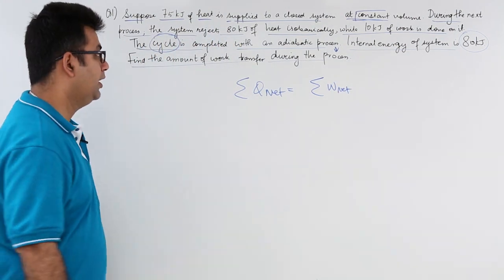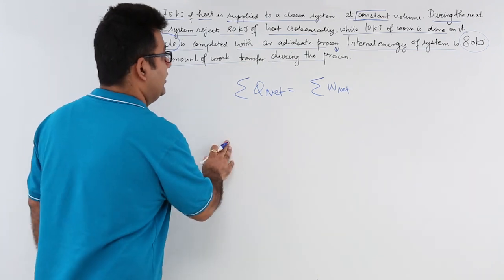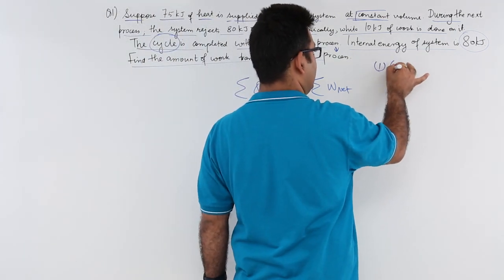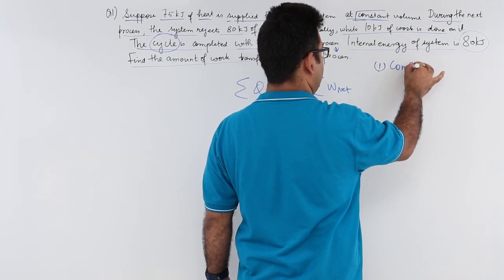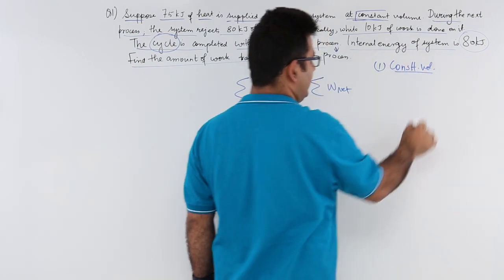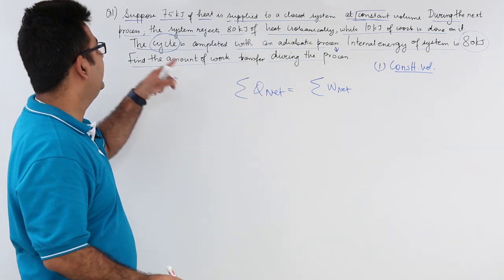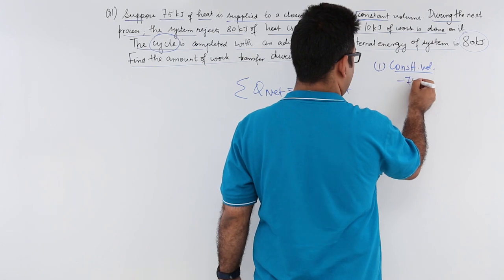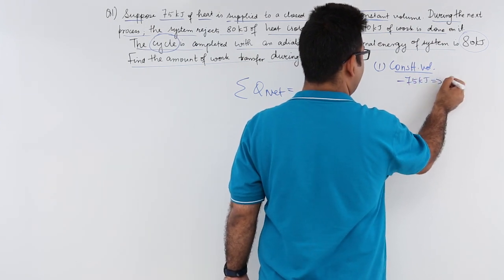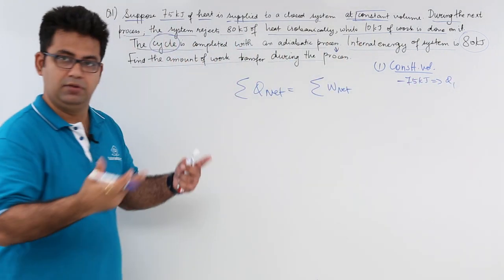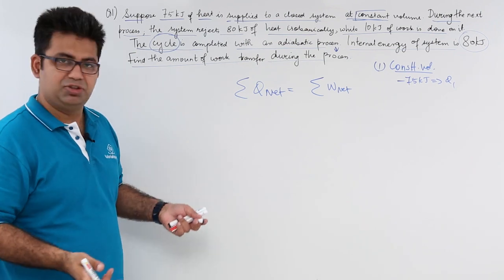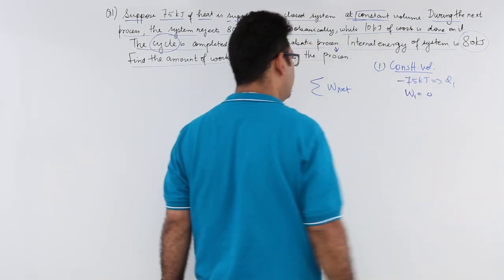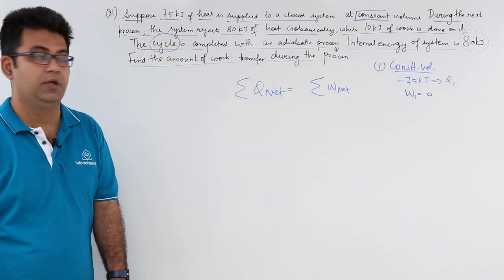There are three processes. The first process is constant volume, and in the constant volume process the heat supplied is 75 kilojoules. Because it is a constant volume process, work done in this process is zero.